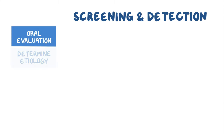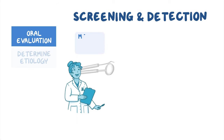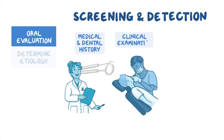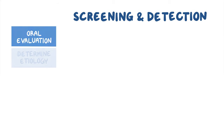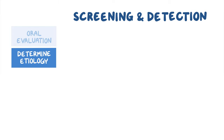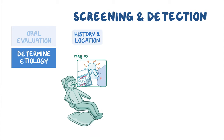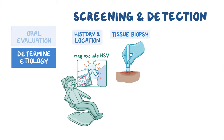Diagnosis begins with screening and detection. An oral evaluation includes a detailed medical and dental history, thorough clinical examination, and detailed documentation. It is always important to determine the etiology of an ulcer since malignant tumors may present with a break in the surface epithelium. History and location may help exclude some causes like the herpes simplex virus, yet a tissue biopsy is often needed to reach a definitive diagnosis. Clinical correlation is often necessary, and pertinent case information should be given to the pathologist when a biopsy sample is submitted.